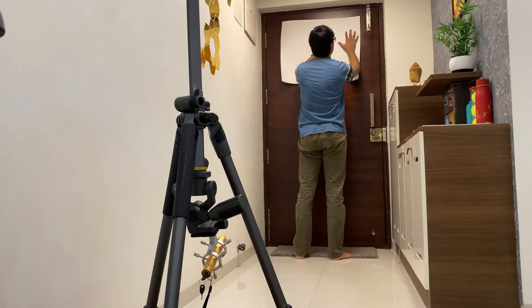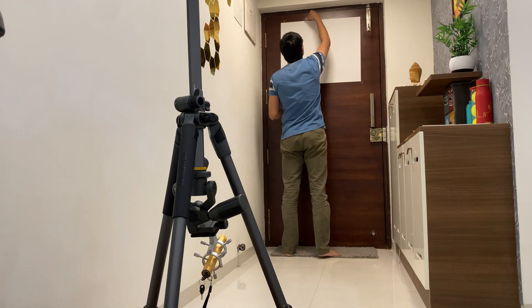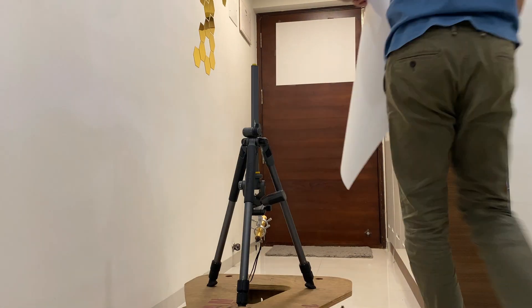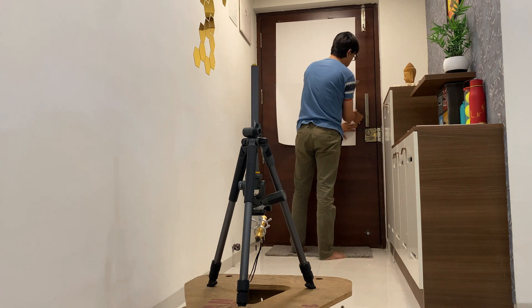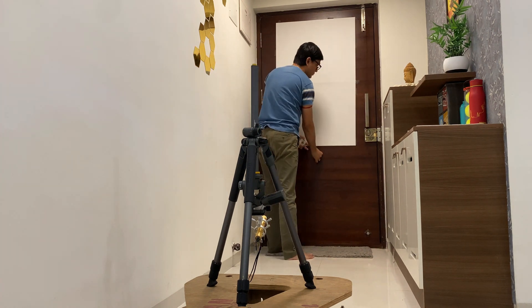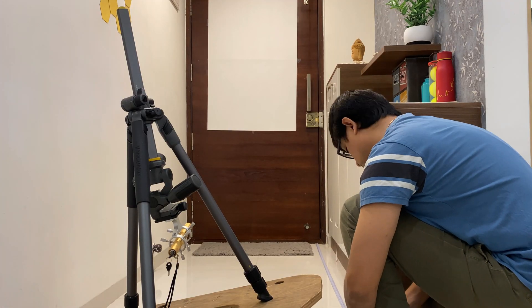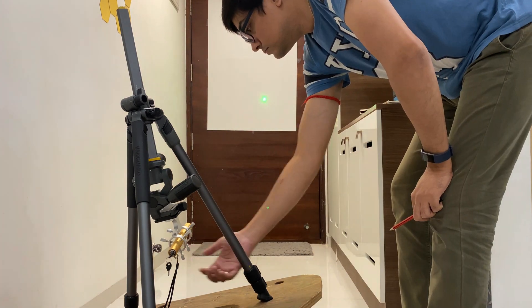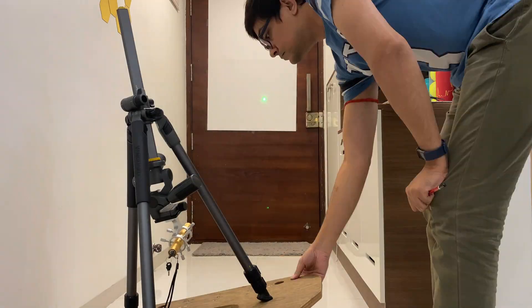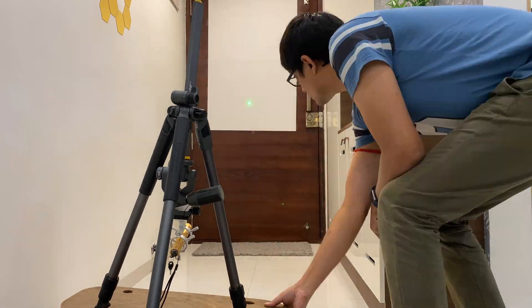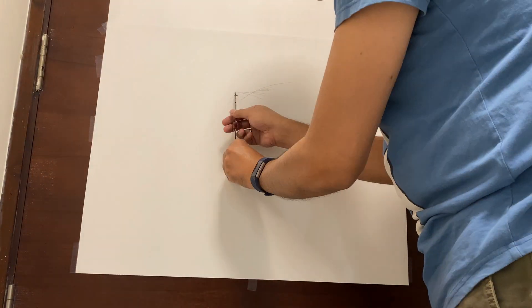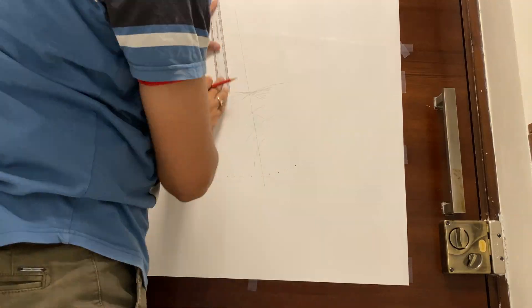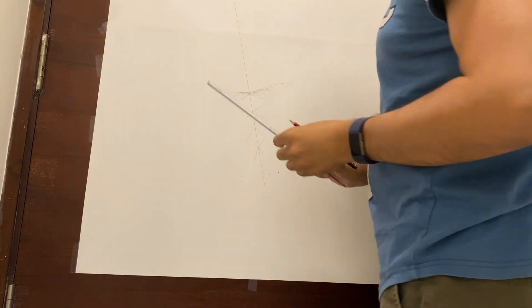I started by fixing two A2 size papers onto the door that my laser pointer was pointing at, then measured the distance between the wall and the platform. Firing the laser, marking the points at different RA axis rotations, marking the center point of the arc.